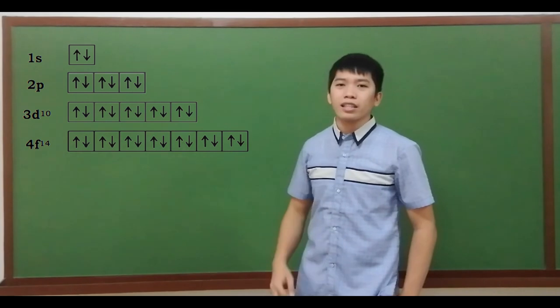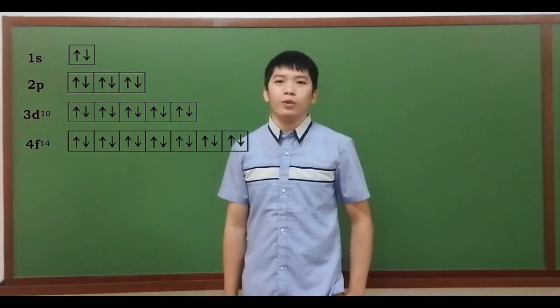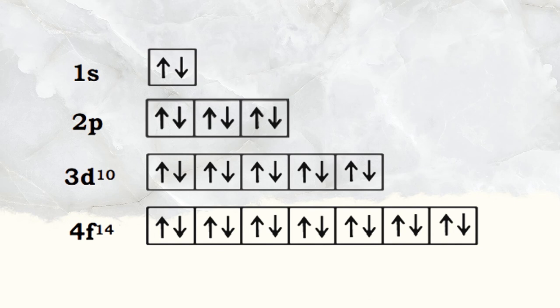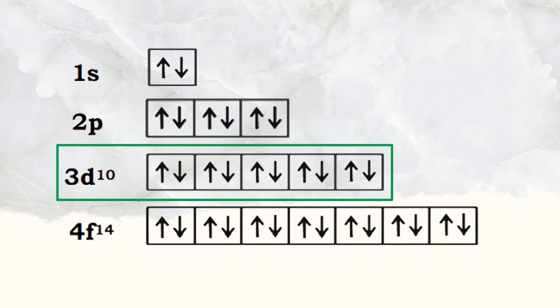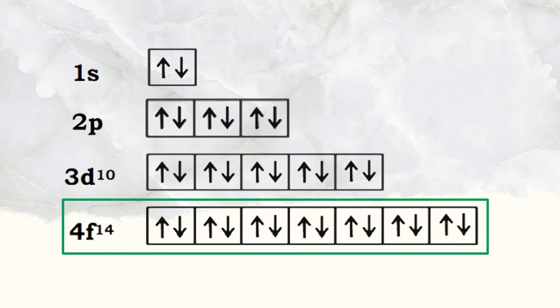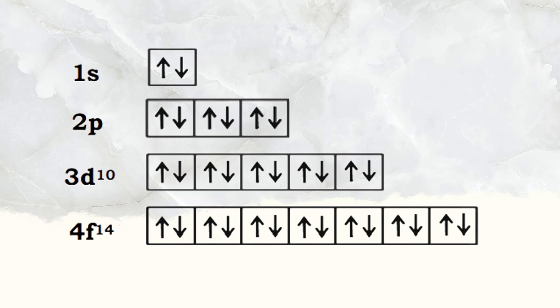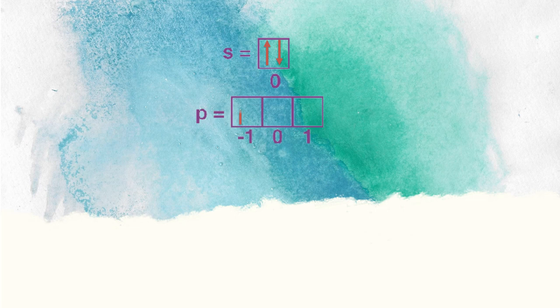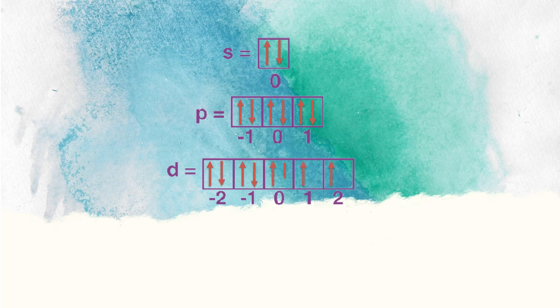It can also represent the electron configuration by using a box diagram, in which orbitals are represented by boxes grouped by sub-level with small arrows indicating the electrons. The S orbital is represented as one box with maximum of two electrons. The P orbital having three boxes with maximum of six electrons. The D orbital having five boxes with maximum of ten electrons. In applying electrons to the boxes using the arrows, you must first complete the upward arrows for all the boxes before applying the remaining downward arrows.